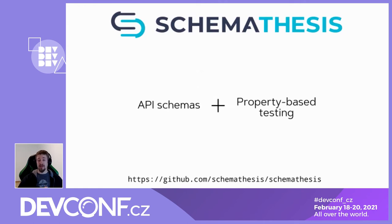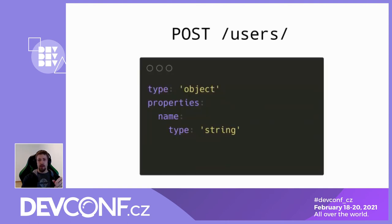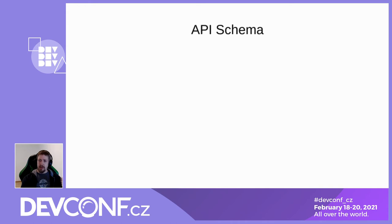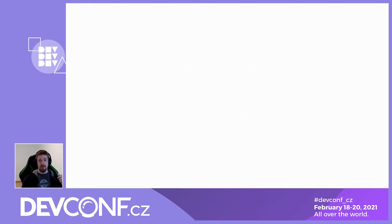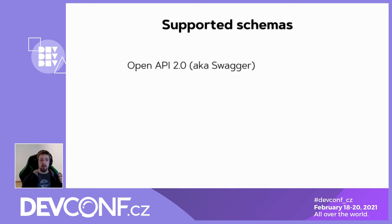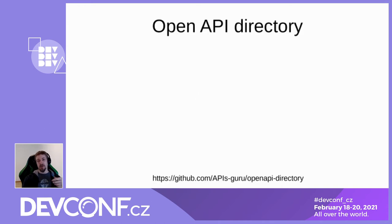Some time ago I started working on a tool that combines API schemas with property-based testing. It's called Schema Thesis. Here's how it works on a toy example. Let's say you can create a user and need to pass a name as a payload. Schema Thesis takes the API schema and creates Hypothesis strategies for all API operations defined in the schema. It makes requests to the API and verifies responses. It supports OpenAPI 2 and 3, and also GraphQL. Generally you need only a valid API schema to make it work.